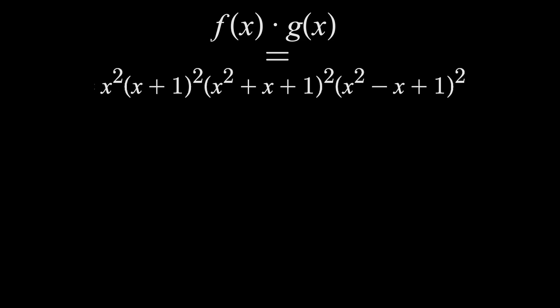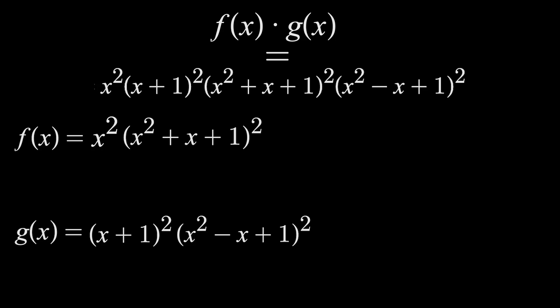So this means our generating functions must contain these as factors. For example, one function could be this here, just directly taking two of these terms, and the other one would be this, taking the other two. These multiply to what we want, and individually they reveal how to label our dice.